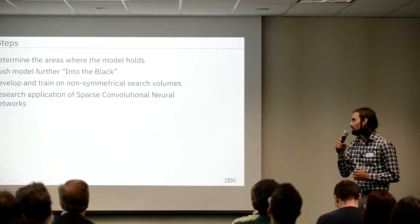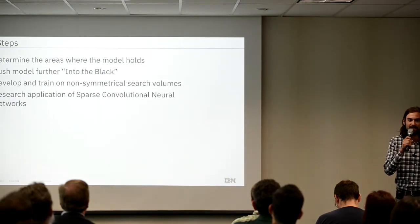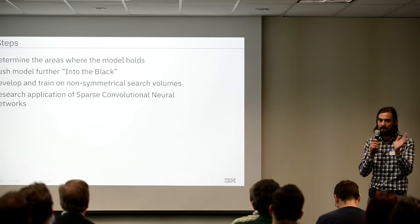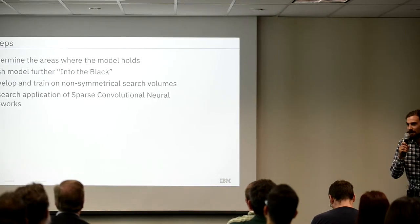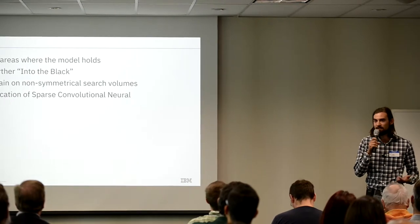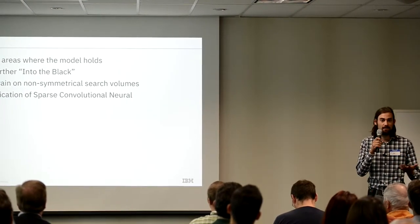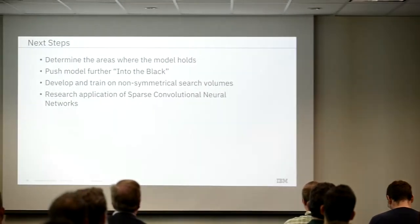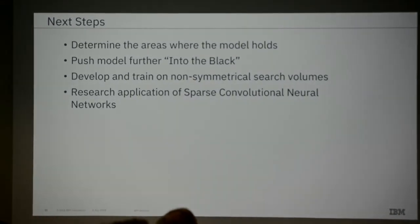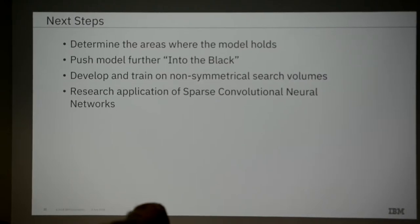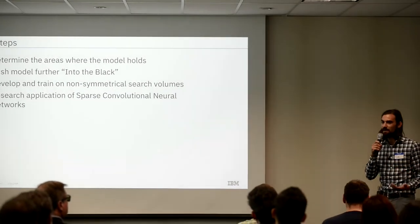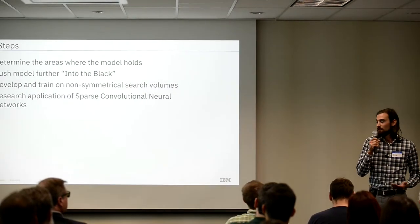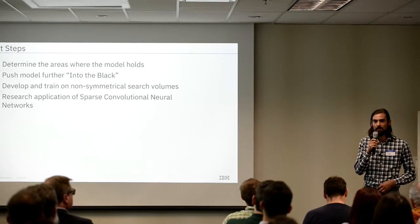We're looking into some pretty cool next steps. We have a functional pipeline that can automatically predict at any place across the mine. We want to see where it's performing best, ask why, and push further into less data-dense areas. We're also looking at the shape of the search space — right now we use cube structures, but mineral geology is elongated, so we're looking at learning on elongated shapes. And to speed up CNN training, we're looking into sparse convolutional neural networks, which is pretty recent research.